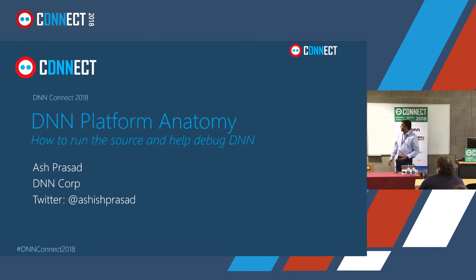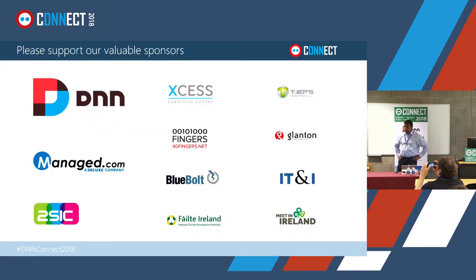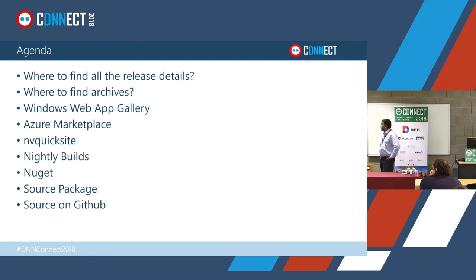I want to thank the sponsors — DNN has access to so many, and without those this event won't be possible. Our agenda for today: we'll start with where to find all the release details, there's a place to go and get them. Something new that happened was the archives — we recently put an archive on our GitHub with everything from version 1 to 9. We'll also talk about where else you can find our DNN product, like Azure Marketplace and the DNN Web App Gallery.